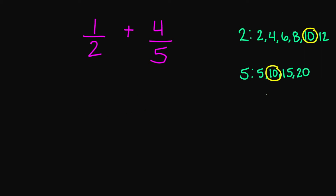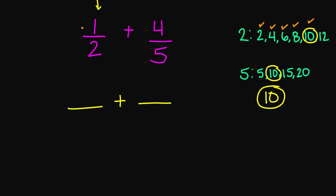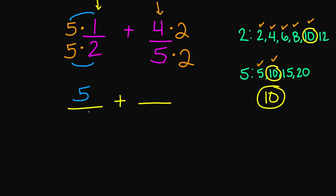I need to have the number 10 in my denominator so that we can add. Starting with 1 over 2 — what number can I multiply my denominator with to give me 10? I'm going to multiply top and bottom by 5. For 4 over 5, I can multiply top and bottom by 2 — that's going to give me 10 in my denominator. So: 5 times 1 is 5, 5 times 2 is 10. And 4 times 2 is 8, and 5 times 2 is 10. Now that my denominators are the same, I'm going to add — 5 plus 8 is going to give us 13, and then you have your 10.